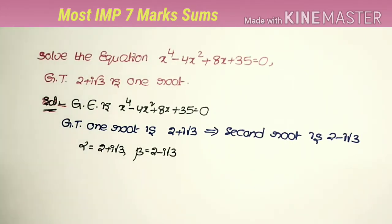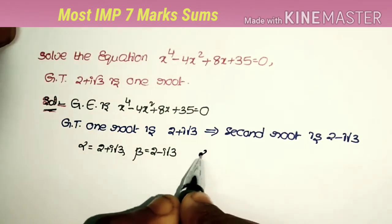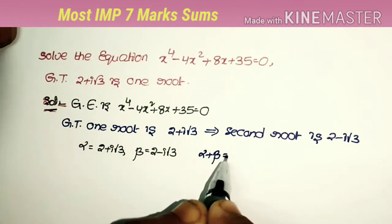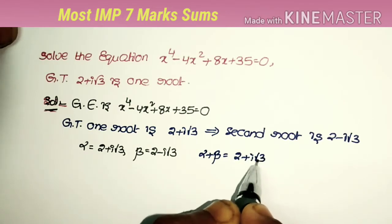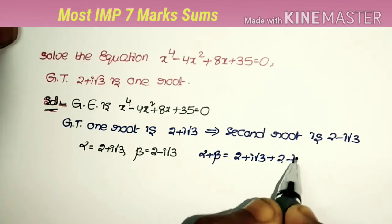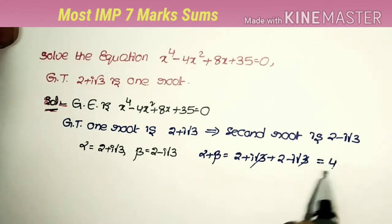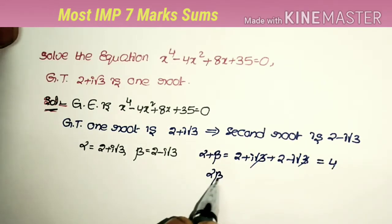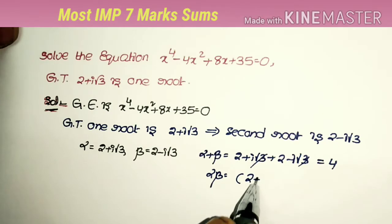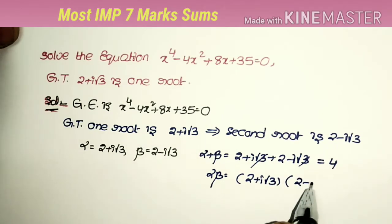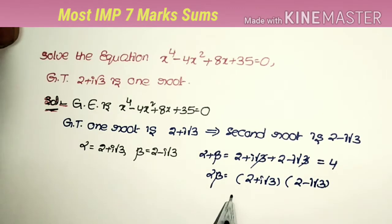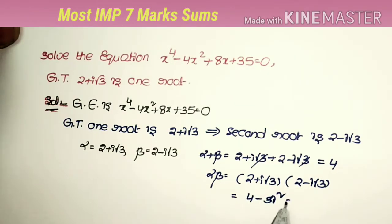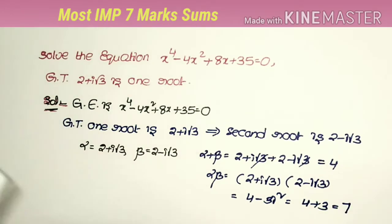Now we find alpha plus beta and alpha times beta. Alpha plus beta = (2 + i√3) + (2 - i√3) = 4. Alpha times beta = (2 + i√3)(2 - i√3), which is of the form (a+b)(a-b) = a² - b², giving 4 - 3i². Since i² = -1, this equals 4 + 3 = 7.